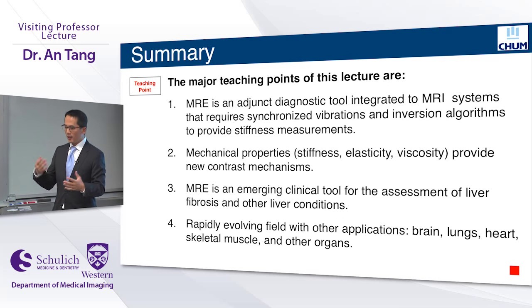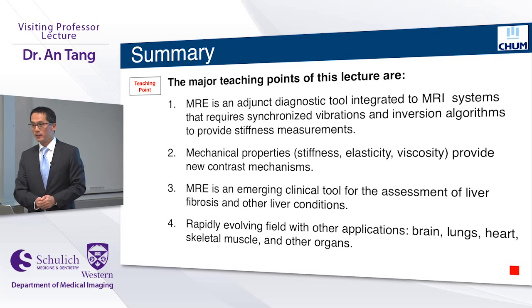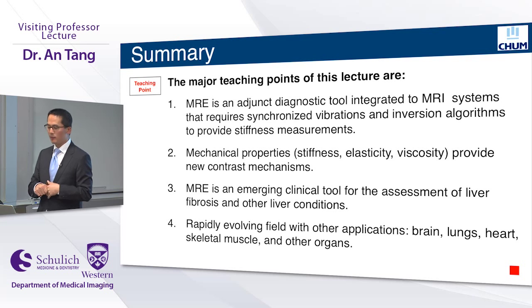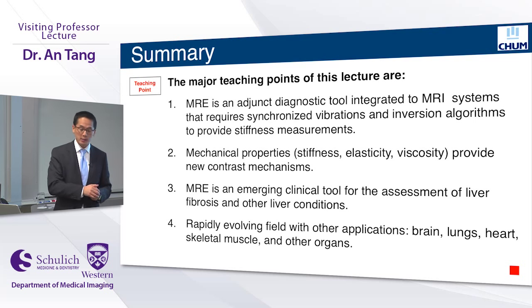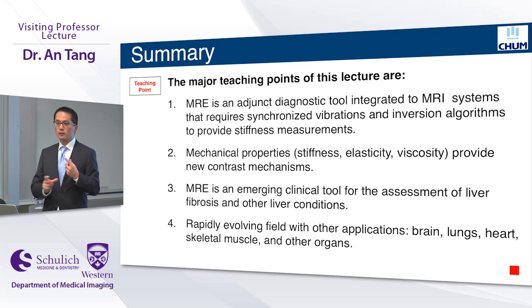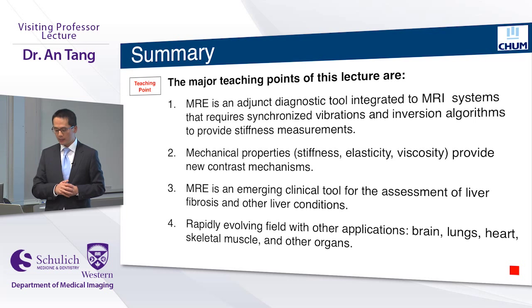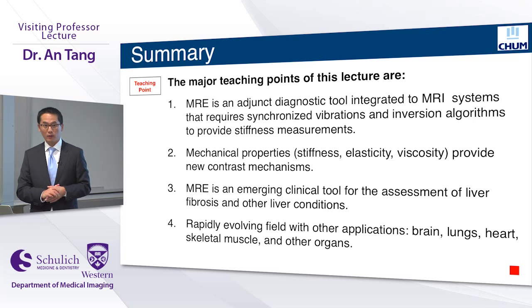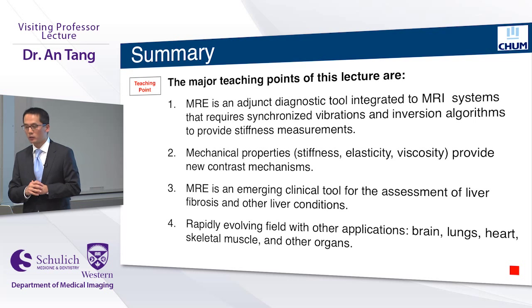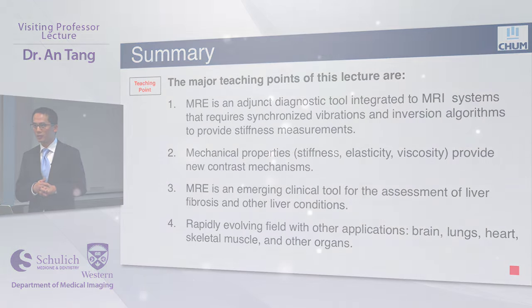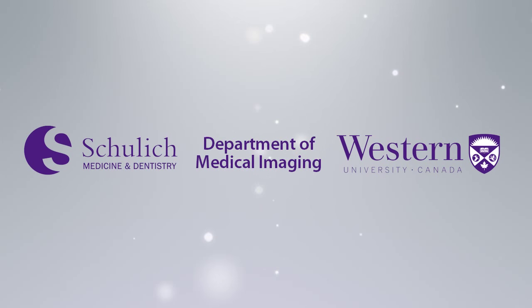In summary, MRE is an exciting field — a new way to assess mechanical properties integrated into existing clinical MRI systems. It requires synchronization of vibrations with motion encoding gradients and relies on clever software to assess stiffness properties. Currently it's an emerging clinical tool for assessment of liver fibrosis, with many investigational uses in the brain, lungs, heart, skeletal muscle, and other organs. Thank you very much.